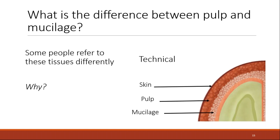What is the difference between pulp and mucilage? We do hear people refer to these plant tissues differently, and the question is why?